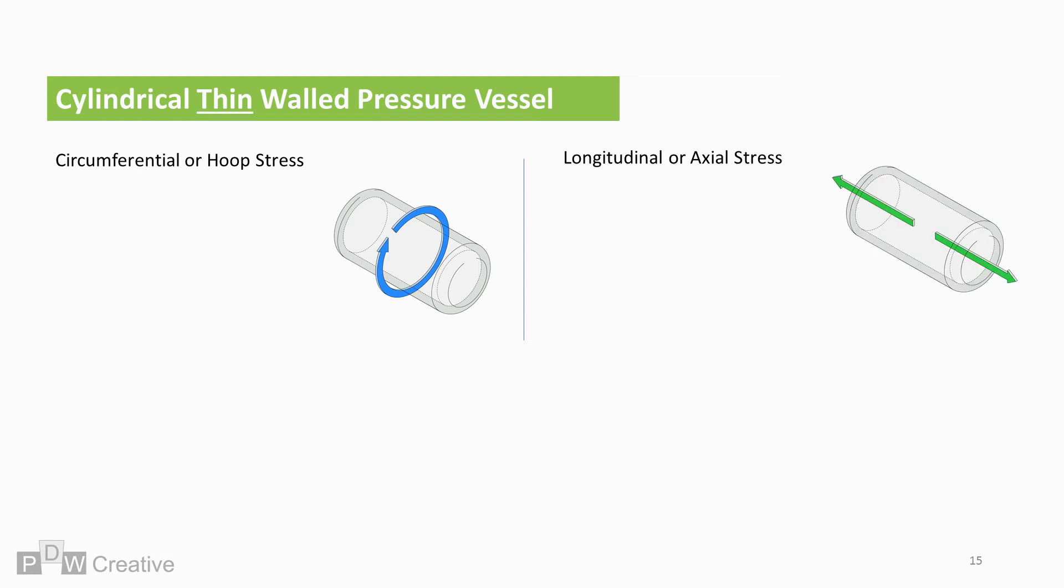The two principal stresses of hoop and axial stresses are calculated as follows. Stress is Pd over 2t, or Pd over 4t respectively. So P, pressure inside the vessel, D, internal diameter, and T, wall thickness, make up the variables.